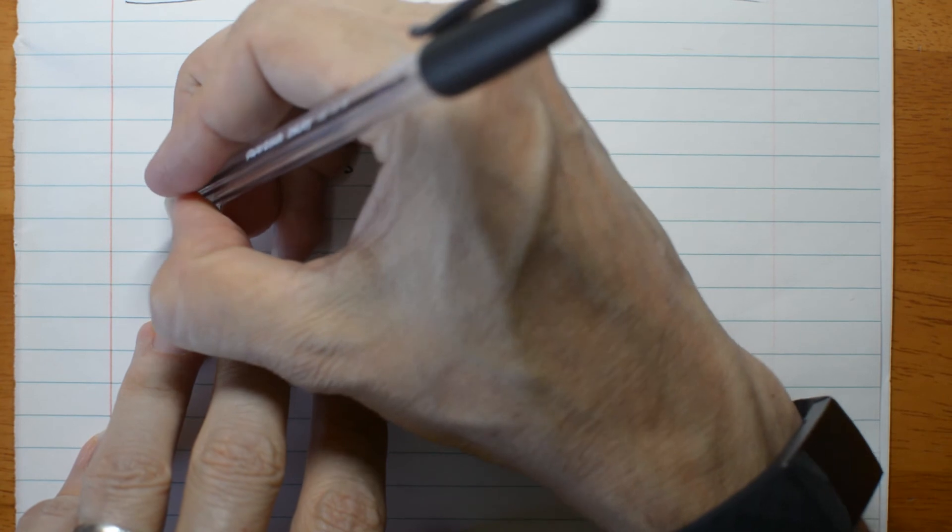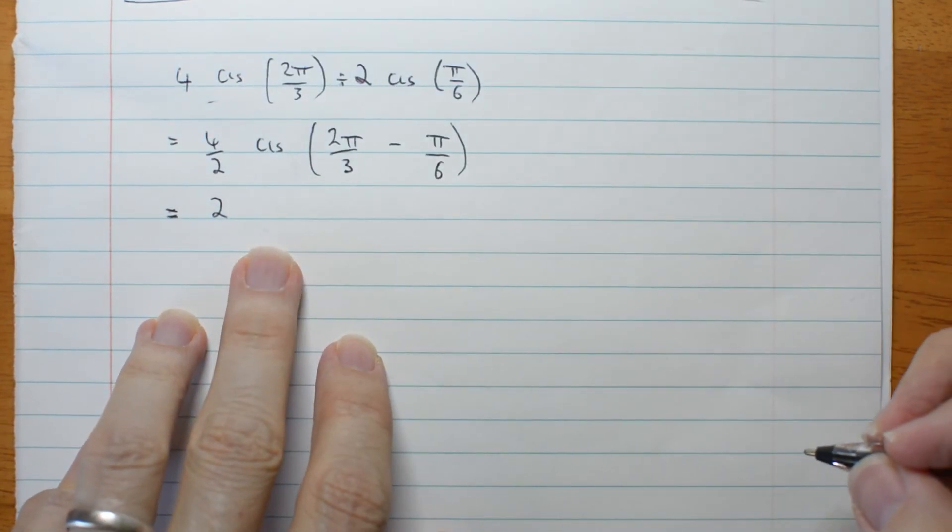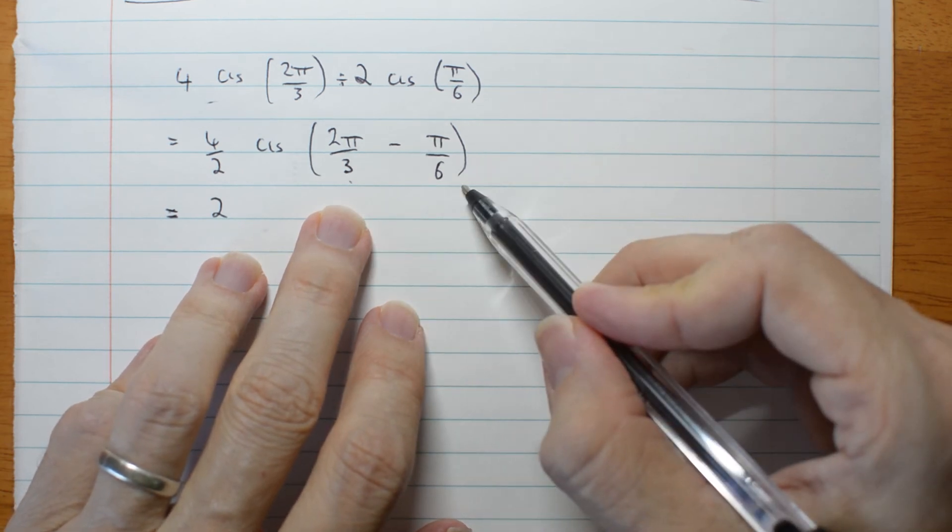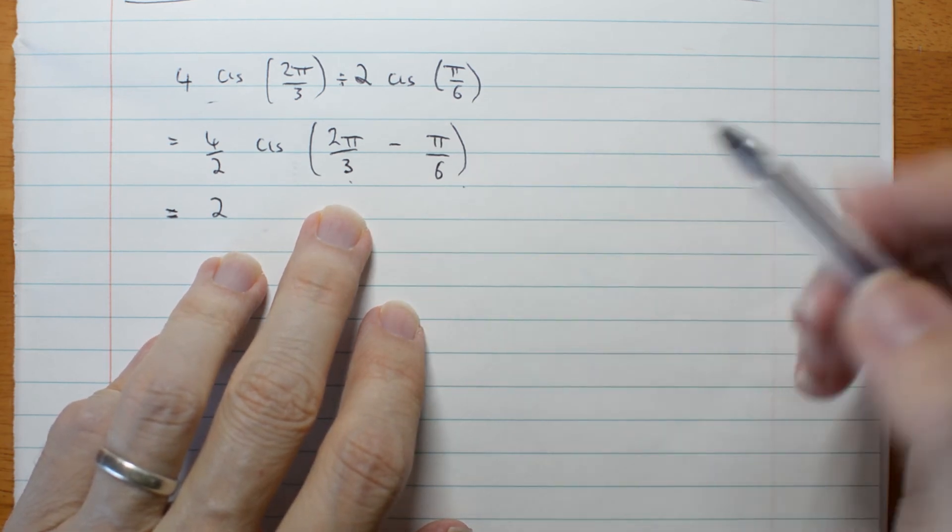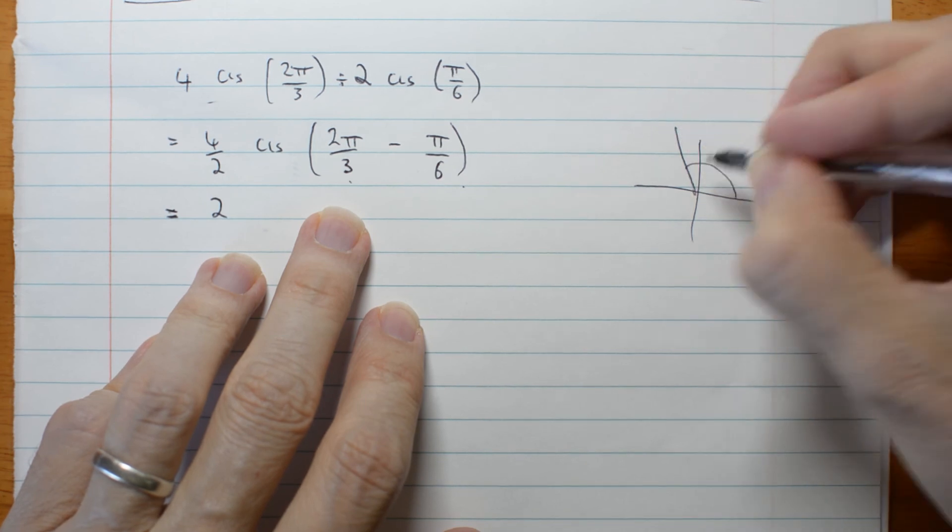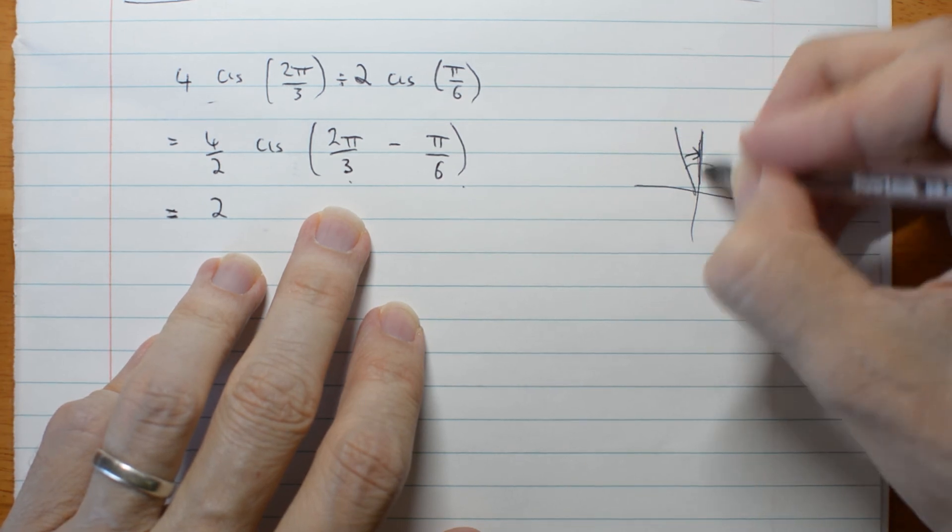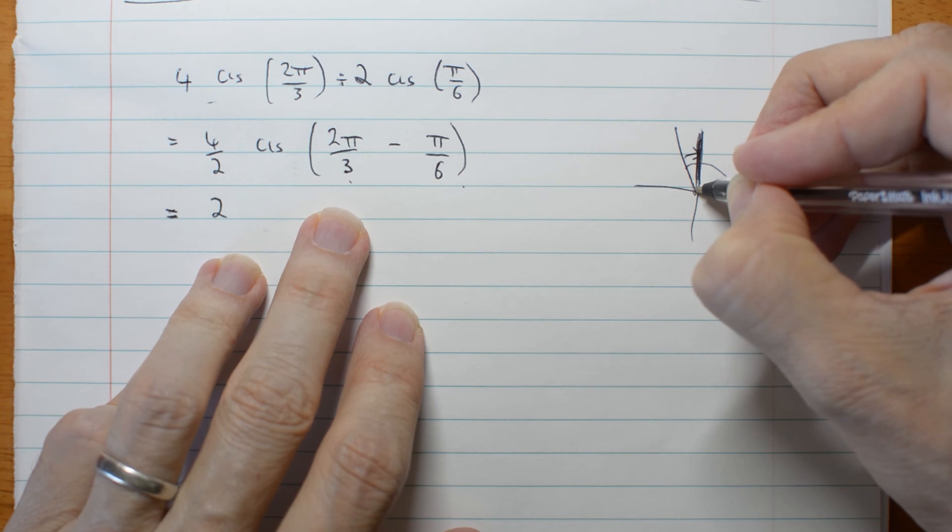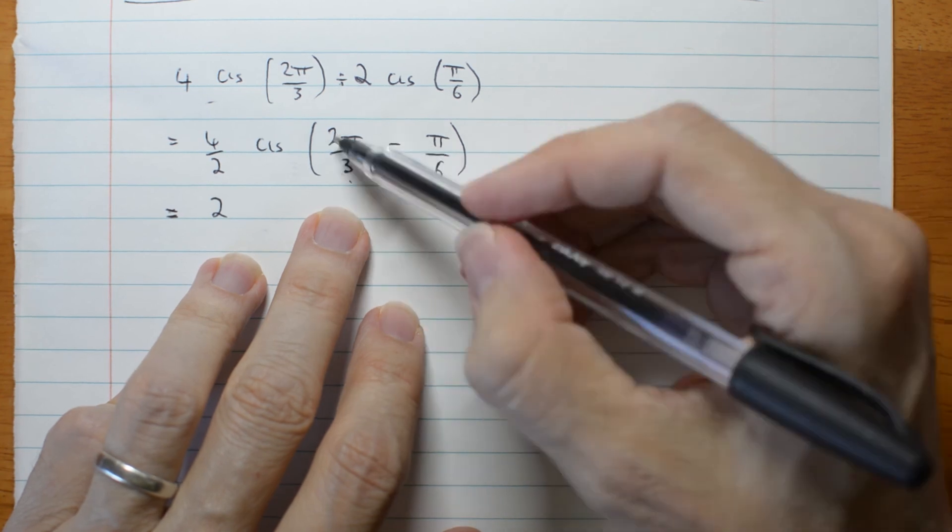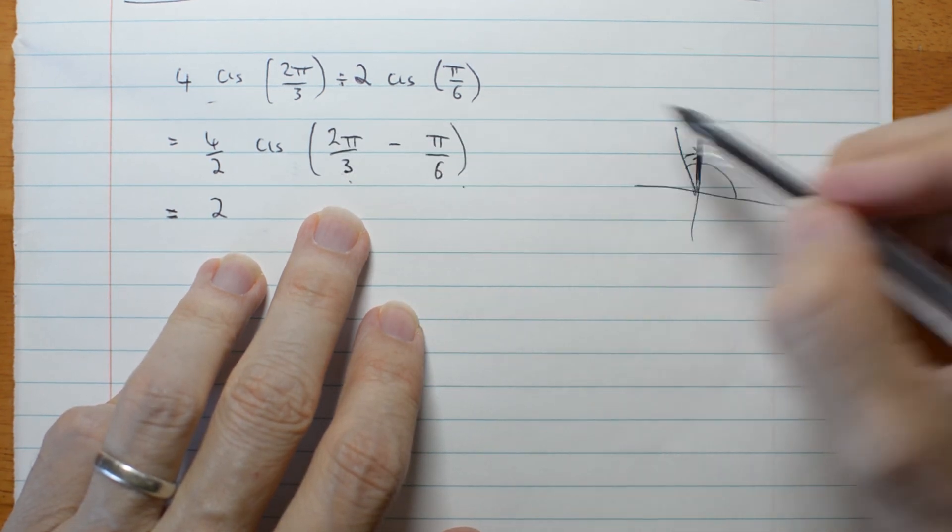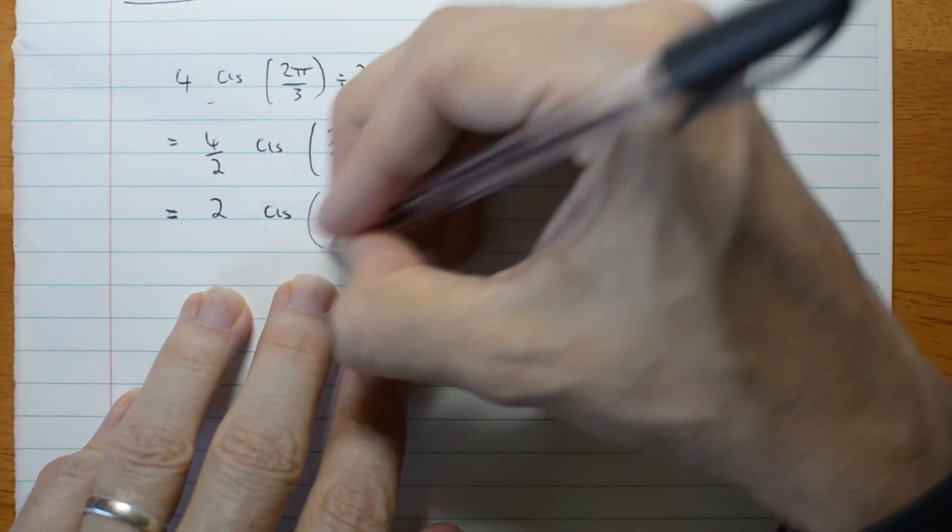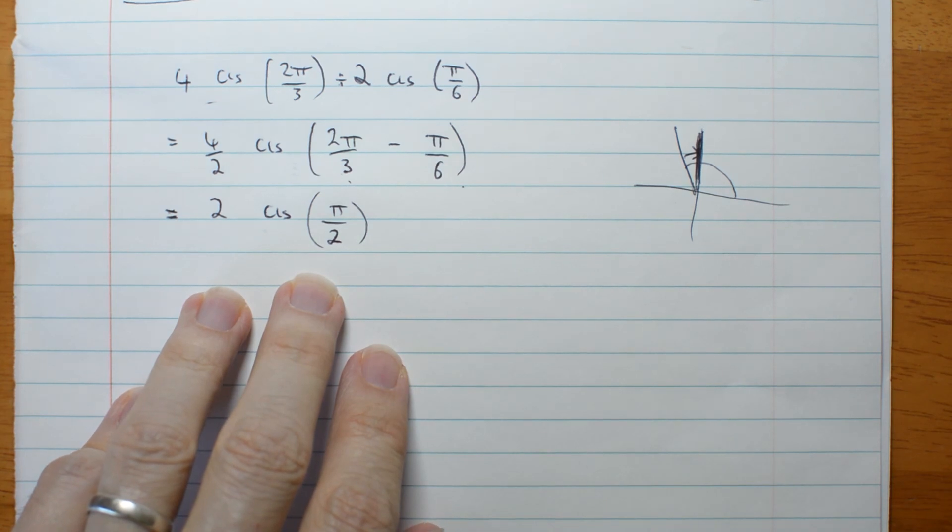Well, that's 2. 4 over 2 is 2. 2π/3 minus π/6. If you can't see that, I mean I can draw a quick diagram for you. That's saying 2 thirds minus 1 sixth. I'm going to get back to π/2. Or you can get your calculator and ask it for 2 thirds minus 1 sixth. Don't worry about the π. 2 thirds minus 1 sixth, and it will give you a half. So you go cis of a half π, π/2.